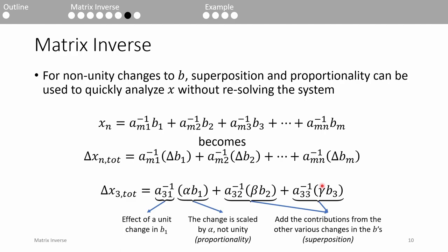If we want to know how the third response variable, x3, is affected by these changes to the b vector, all we do is take this equation but change the b's to the b times the respective scale factor and add them.